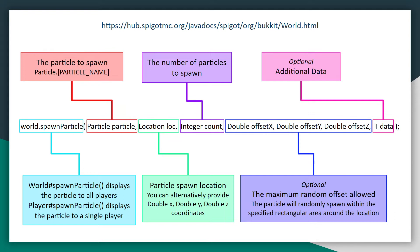This method call will take in a handful of parameters. First of all you have to give it a particle, which will be the particle you're going to spawn. The next one will be a location object, which will be the location that the particle will actually spawn at. Alternatively, you can also give it a double X, Y, and Z coordinate and that will be the position the particle will spawn at.